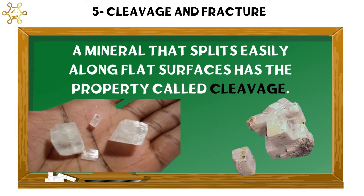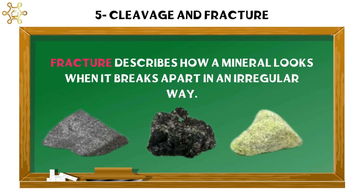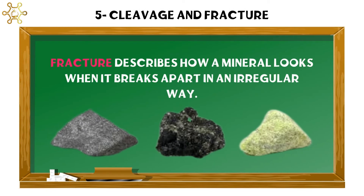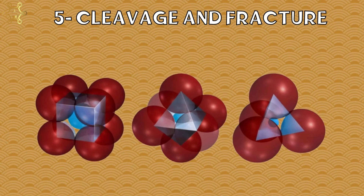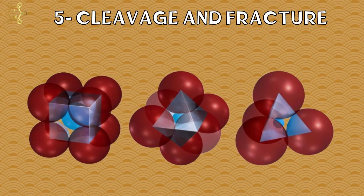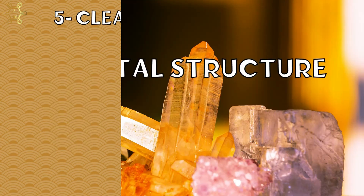Cleavage and Fracture: a mineral that splits easily along flat surfaces has the property called cleavage. Fracture describes how a mineral looks when it breaks apart in an irregular way. Cleavage and fracture depend on how the atoms in its crystals are arranged.